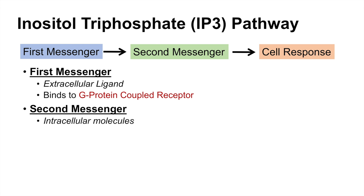The second messenger is an intracellular molecule, and in this IP3 pathway, those intracellular or second messenger molecules are either IP3 (inositol triphosphate), diacylglycerol or DAG, and calcium. I'll get into more detail on what each of these does a little bit later.